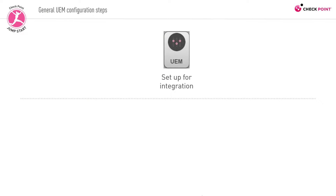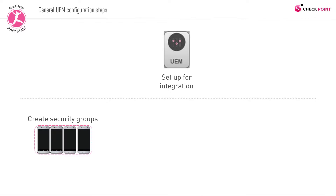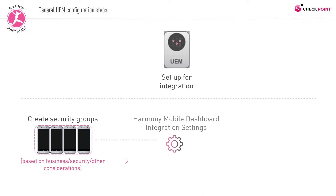So generally speaking, what does the configuration include on the UEM's end? First, you create security groups to which devices will be associated. Groups can be created based on business considerations, security considerations, etc. Once the implementation process is complete, these groups will be associated with designated Harmony Mobile security policies. Next, you define the Check Point Harmony Mobile dashboard integration settings. This includes the provision of admin authentication credentials, API IDs, access keys, and anything that is needed to create that bridge between the UEM and Harmony Mobile.